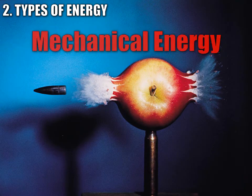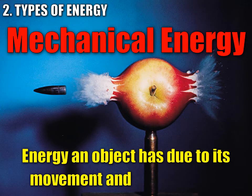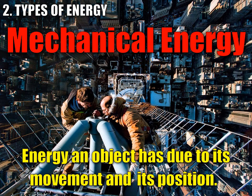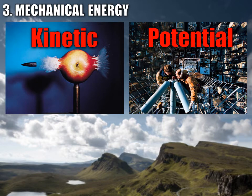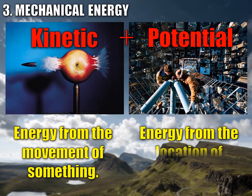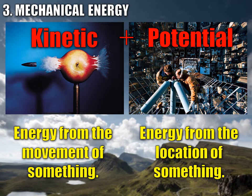Lastly, we have mechanical energy — the energy that an object has due to its movement or its position. Even though these workmen are not moving, we say they have mechanical energy, because if they were to let go, they would fall and start to move. Mechanical energy takes two forms: motion, which is called kinetic energy, and height or position, which is called potential energy. Kinetic energy plus potential energy equals mechanical energy.